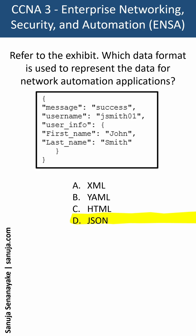JSON is commonly used in Cisco automation products, so you should be able to recognize it. One way you can recognize it is that the object — one or more key-value pairs — is enclosed in braces. We have braces right here, so that's one way we know it's JSON.